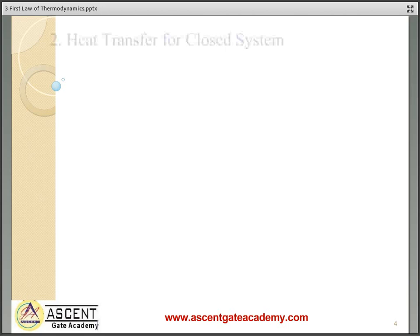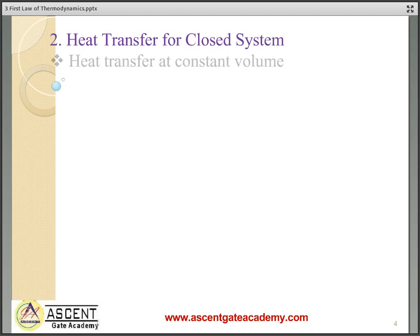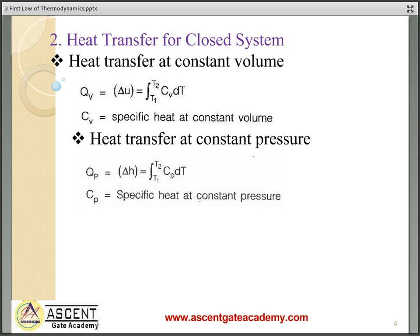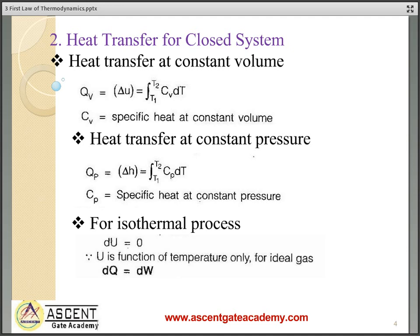Heat transfer for a closed system: at constant volume, Q equals the integration of Cv dT from T1 to T2. At constant pressure, Q equals the integration of Cp dT from T1 to T2. For an ideal gas, Cp and Cv are constant with respect to temperature, so heat transfer at constant pressure can be written as Cp·ΔT, and heat transfer at constant volume as Cv·ΔT.